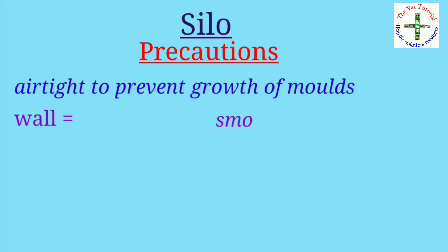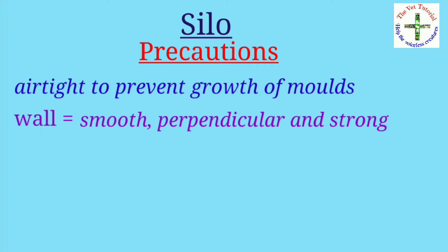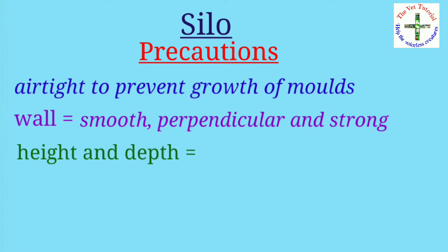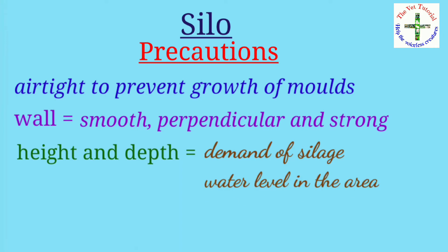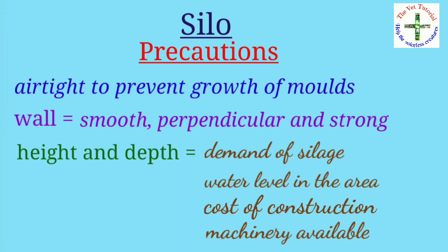The walls of the silo should be smooth, perpendicular, and strong to allow better compression. The height and depth of the silo depend on the water table of the area, cost of construction, and machinery available for filling. The top of the silo is covered with a waterproof material like a plastic sheet or concrete slab.